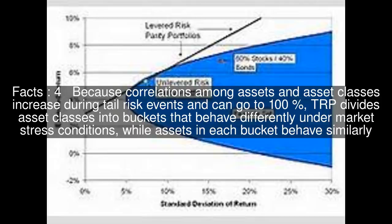TRP divides asset classes into buckets that behave differently under market stress conditions, while assets within each bucket behave similarly.